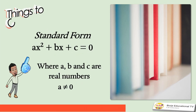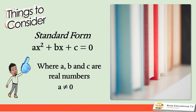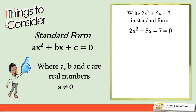In solving quadratic equations, there are things that we're going to consider. First is the standard form. The equation must be in the form ax² + bx + c = 0, where a, b, and c are real numbers such that a should not be equal to 0. For example, if we have 2x² + 5x = 7, rewriting it into standard form gives us 2x² + 5x - 7 = 0.